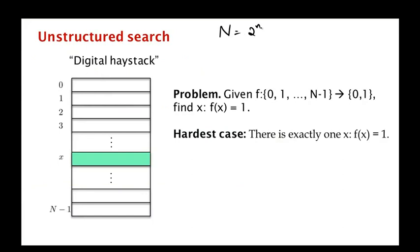This table is given to us in the form of a function which maps 0 through N minus 1 to 0 or 1 — it's a Boolean function. What we want to do is find an x such that f(x) equals 1. We are going to assume the hardest case: there is exactly one such x where f equals 1.